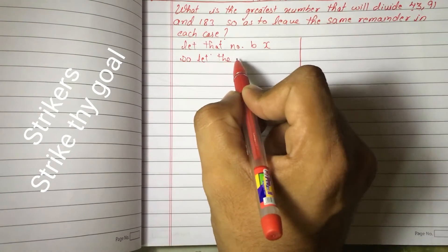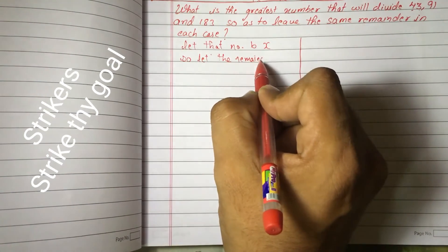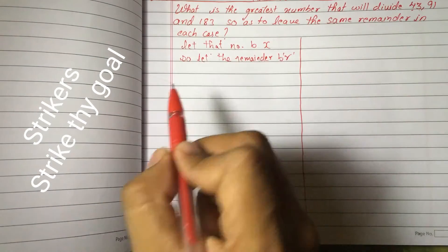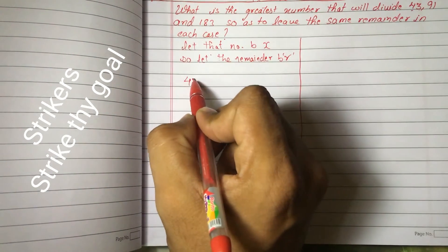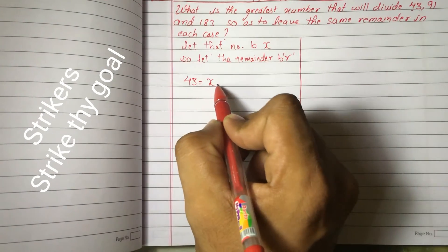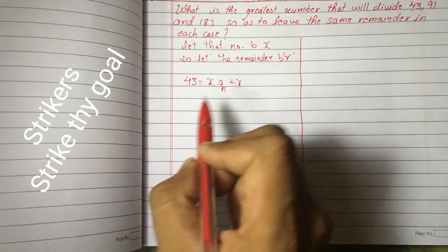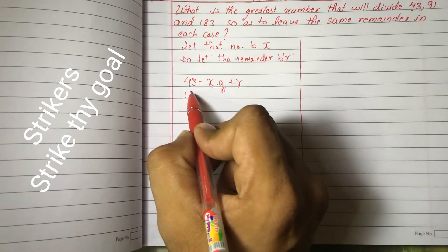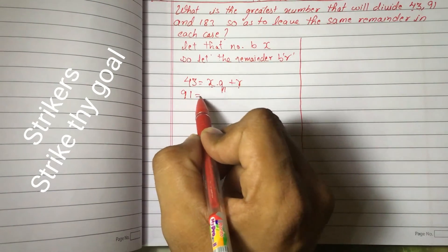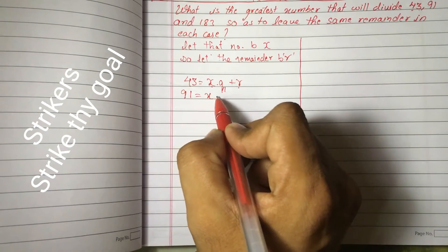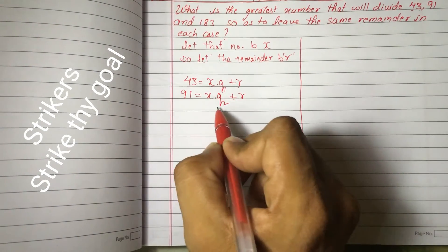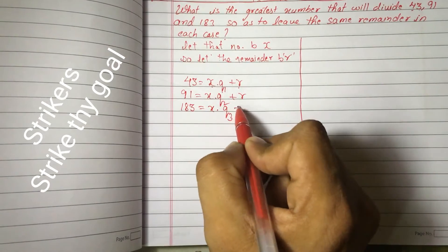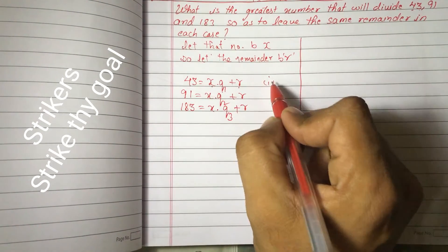Let the remainder be R. By the simple division algorithm we can write: 43 = X × Q1 + R, where Q1 is the quotient when 43 is divided by X and the remainder is R. Similarly, 91 = X × Q2 + R, where the quotient is Q2, and 183 = X × Q3 + R. Call these Equation 1, Equation 2, and Equation 3.